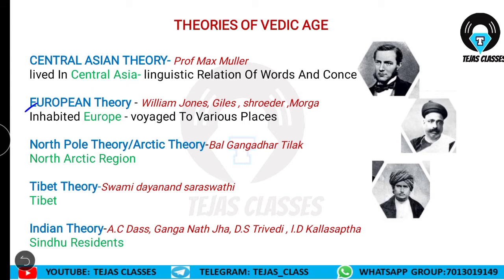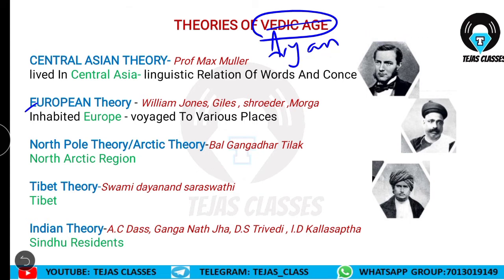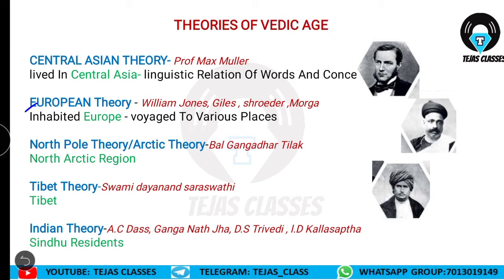The European theory was given by William Jones, Giles, Schroeder, and Morgan. According to them, these people inhabited Europe and traveled from Europe to various places. Next is the North Pole or Arctic theory given by the famous Indian freedom fighter Bal Gangadhar Tilak, who said that the Indo-Aryans originally belonged to the North Arctic region and came to India from there. Then comes the Tibet theory given by Swami Dayanand Saraswati, who said these people came from Tibet.